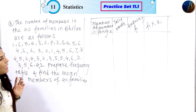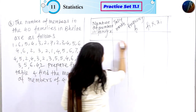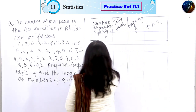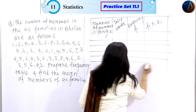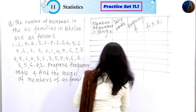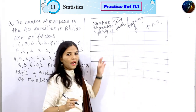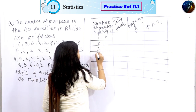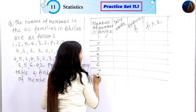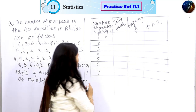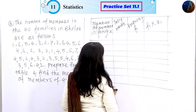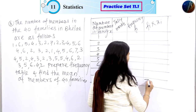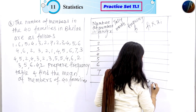The number of members goes from 1 through 7. So xi values are 1, 2, 3, 4, 5, 6, and 7. We take a look at that. Here, N is done — the summation of N. And here we do the summation of fi × xi as the addition column.